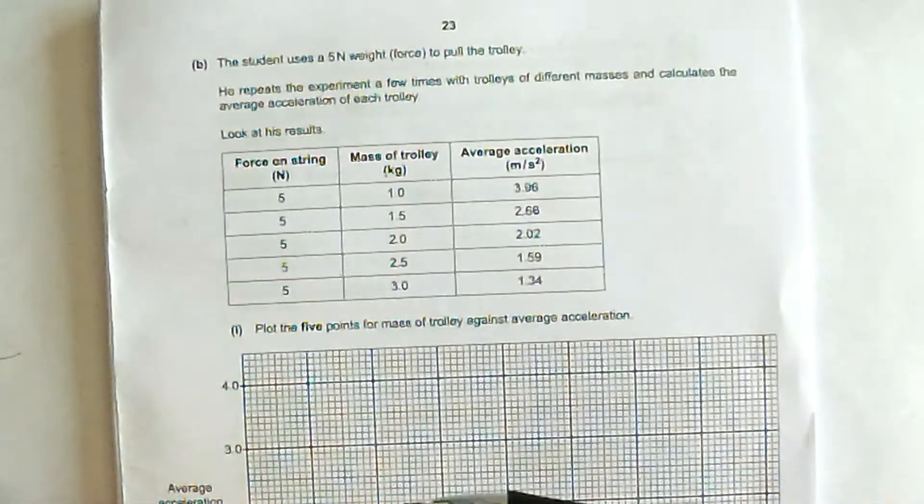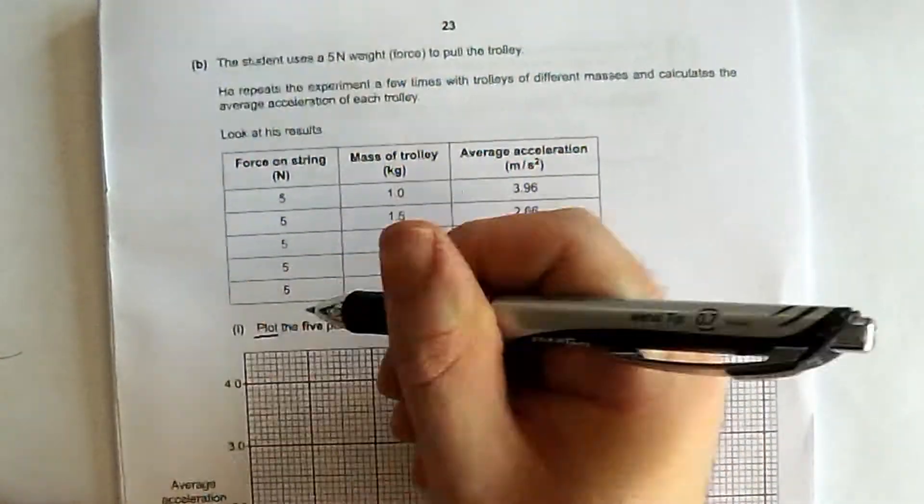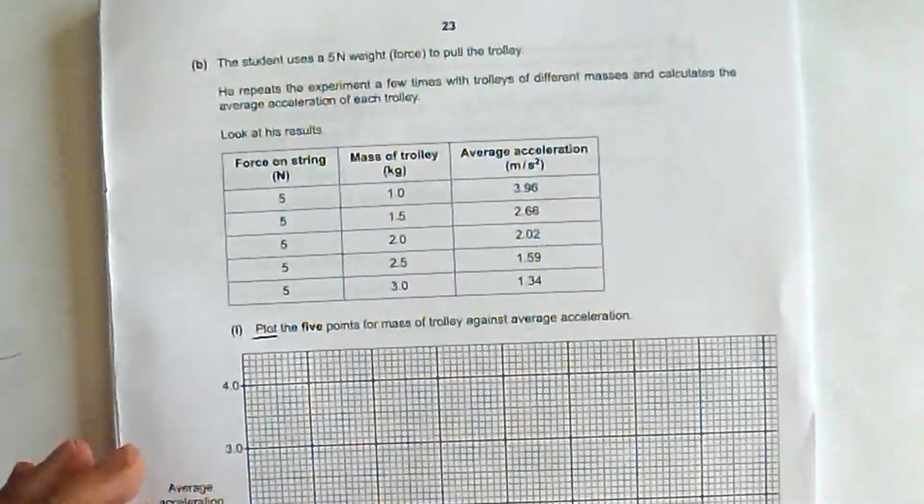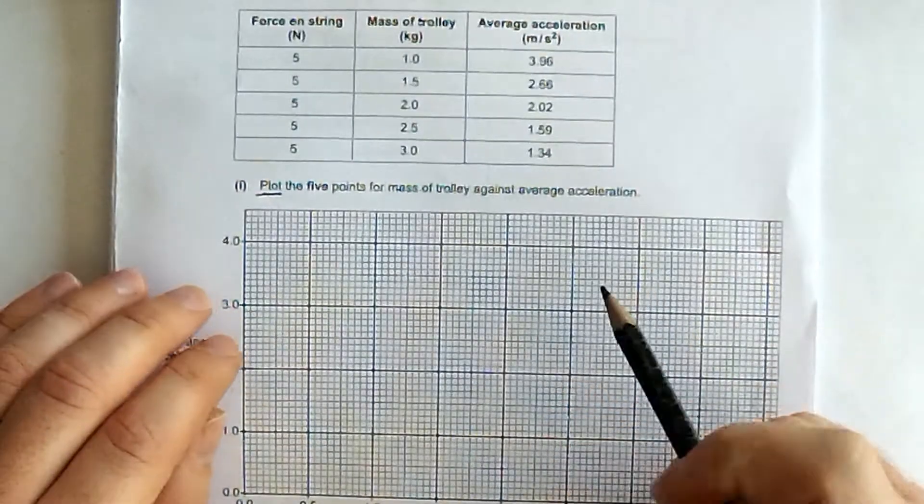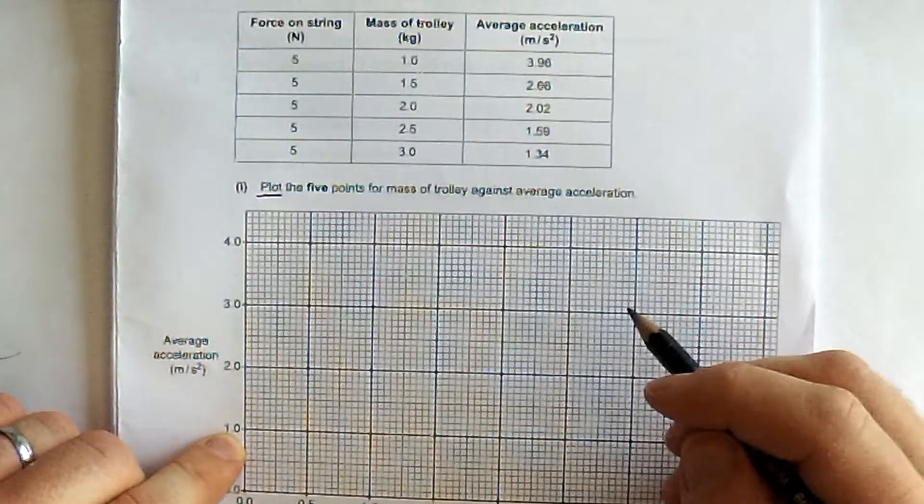So plot the five points for the mass of the trolley. One mark. Now remember when you're using graphs in exams, you need to be accurate to half a small square. That's pretty accurate. So do this with a bit of care.